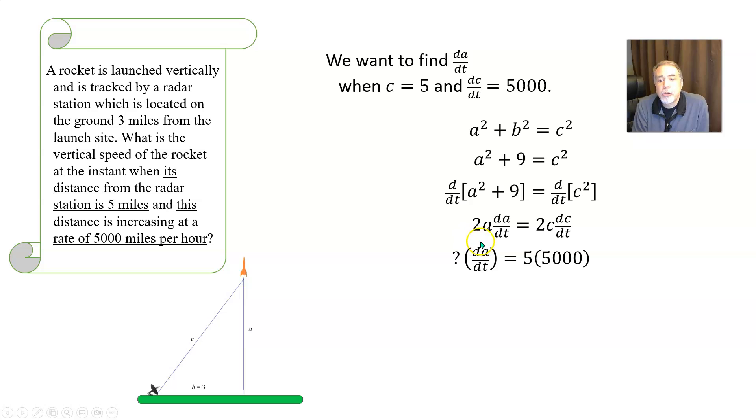And I can plug in, well, da/dt is what we're trying to find. So I'm not going to plug in anything for that. That's what I'm trying to solve for. But I can plug in five for c, and I can plug in 5,000 for dc/dt. And uh-oh, what about a here? They didn't give me a number to plug in for a, and that's not the thing I'm trying to find. What do I do with that? Well, this is an example of where you might have to go back to the original equation and use that to come up with that missing number to put in for a.